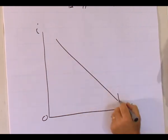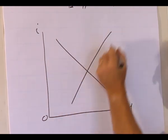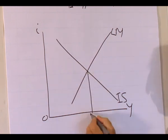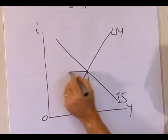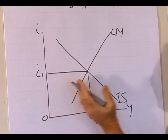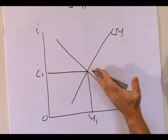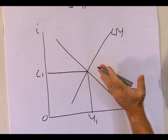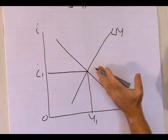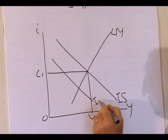We start off with the IS model. Equilibrium output level Y1, equilibrium interest rate at I1. We had a decrease in consumer and investor confidence, decreasing demand for goods and services, therefore the IS curve shifts to the left.